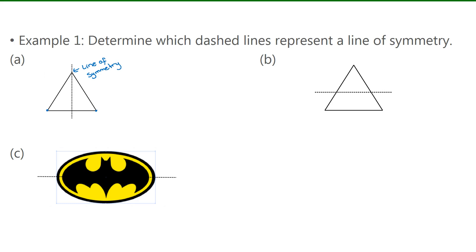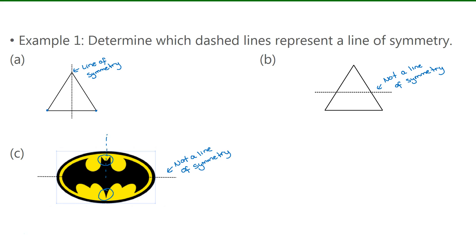For B, if you folded it down, the top half would not match with anything below. So this is not a line of symmetry. For C, if you folded this picture of a bat down, the top part would not match with anything below — so that is not a line of symmetry either. That doesn't mean there's no line of symmetry at all; if you fold it across this way, this one would be a line of symmetry.